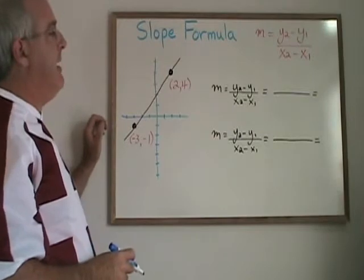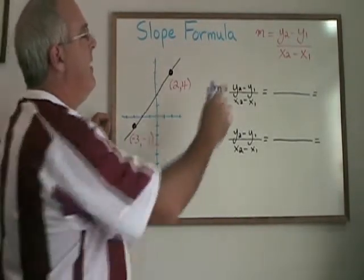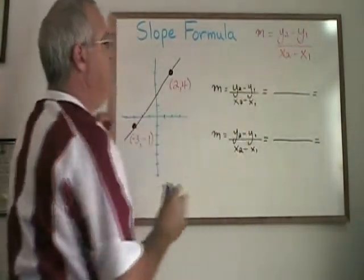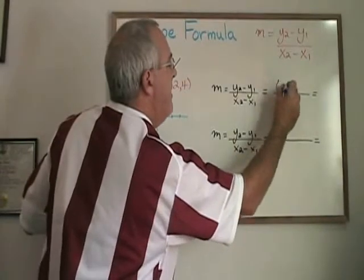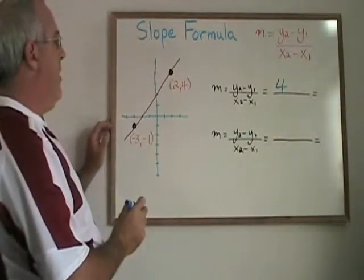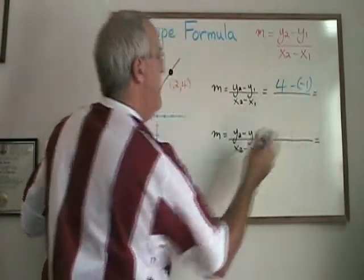Let's try filling in the slope formula with the x and y coordinates of those points. The first thing I have to fill in is y2. y2 will therefore be the 4. Minus y1, which means minus negative 1 in this example.